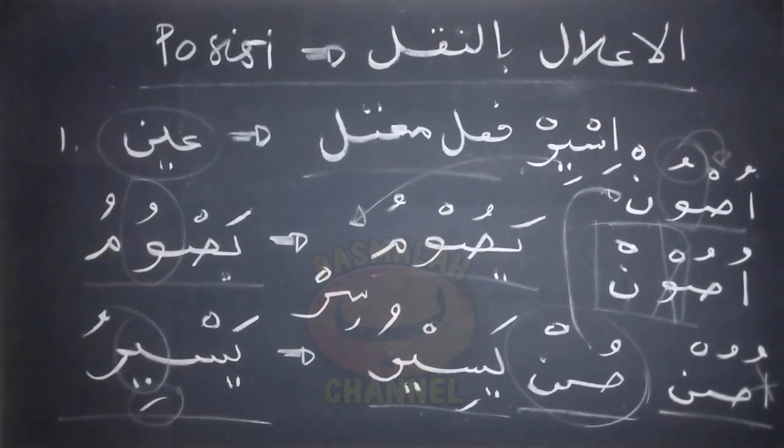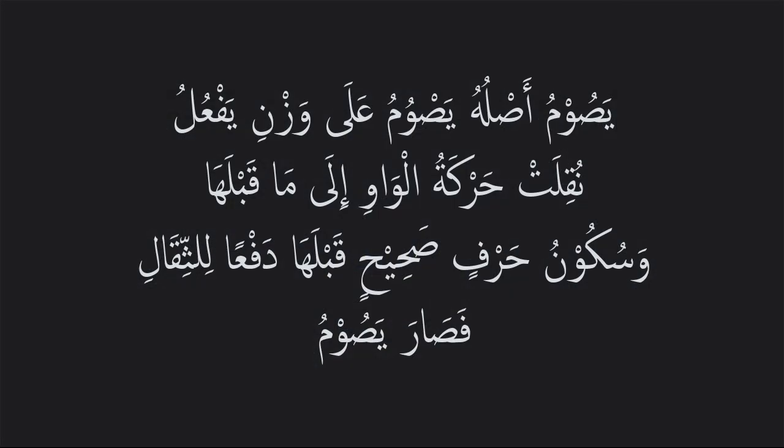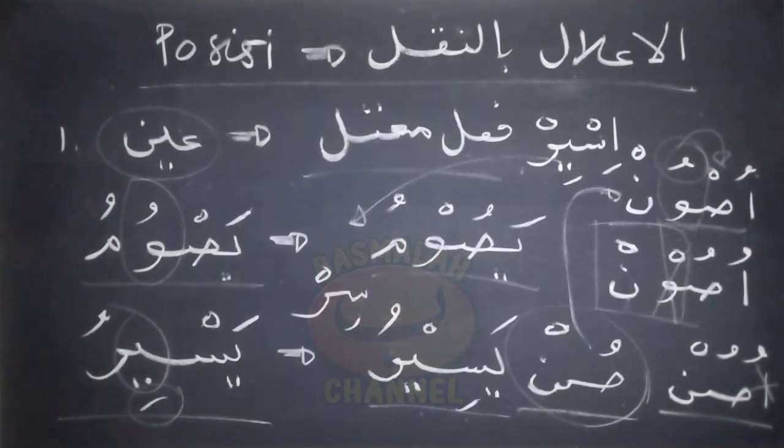Proses i'lalnya dalam bahasa Arab: yaswumu asluhu yaswumu ala wazni yafu'ulu. Nukilat harkatul wawi ilama qablaha wasukunu harfin suhihin qablaha daf'an liftiqal fasara yaswumu. Artinya: lafad yaswumu pada asalnya adalah yaswumu, mengikuti wazan yafu'ulu. Harkat daripada huruf waw ditukar atau dipindah dengan harkat dari huruf sebelumnya, sementara huruf sebelumnya adalah berupa huruf soheh yang dalam keadaan sukun, hal tersebut dilakukan karena untuk menghindari bacaan yang berat, maka jadilah lafad yaswumu.